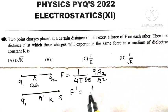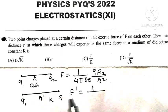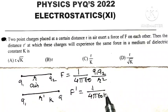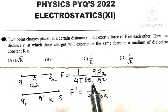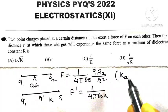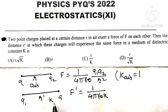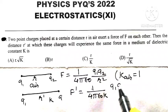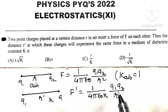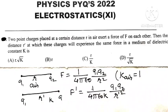The new force F' = (1/4πε₀K) × Q1Q2/R'², because the medium now has dielectric constant K. For air, K equals one, which is why no K term appeared in the original formula. The new distance is R'.